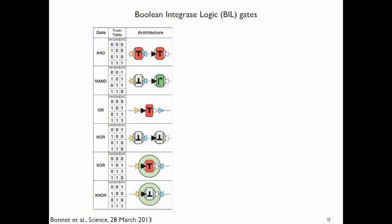Now the enzymes that are doing the flipping are called integrases. The logic that we're implementing is Boolean logic. So we call these things when we put all together Boolean integrase logic gates made from transcriptors or BEAL gates. And you can see the different configurations for the six gates shown here.